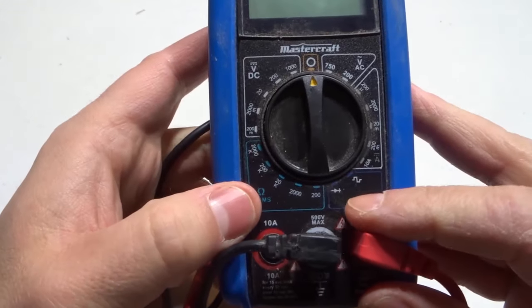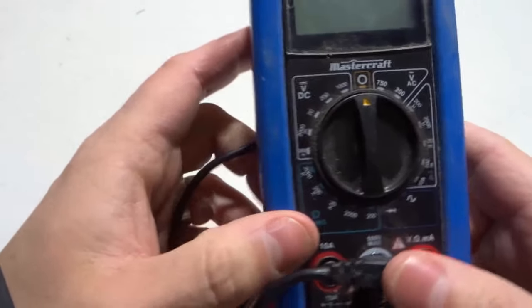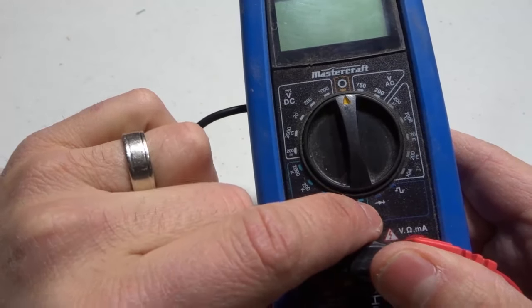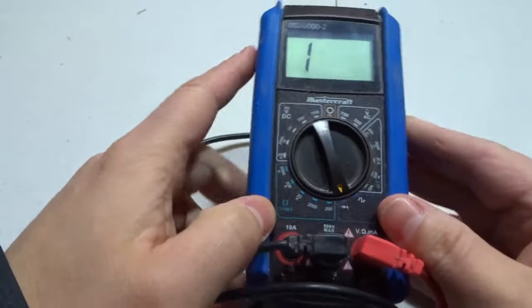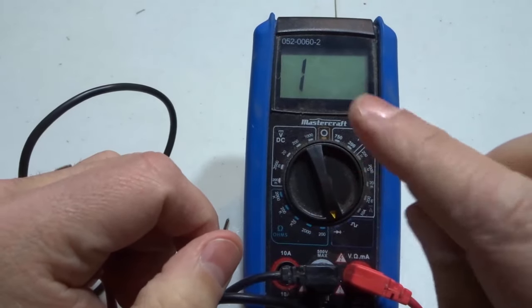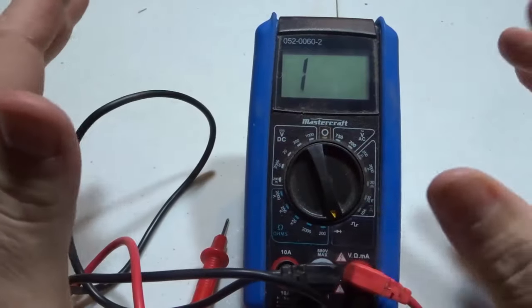Now what you want to do is look on your multimeter for the continuity symbol. In this case as you can see it's right here, it's a diode symbol. So you're going to turn that to the diode symbol. Now in other multimeters it's going to have a different continuity symbol, it's going to be like a little dot with some waves, almost like sound is coming out of it.